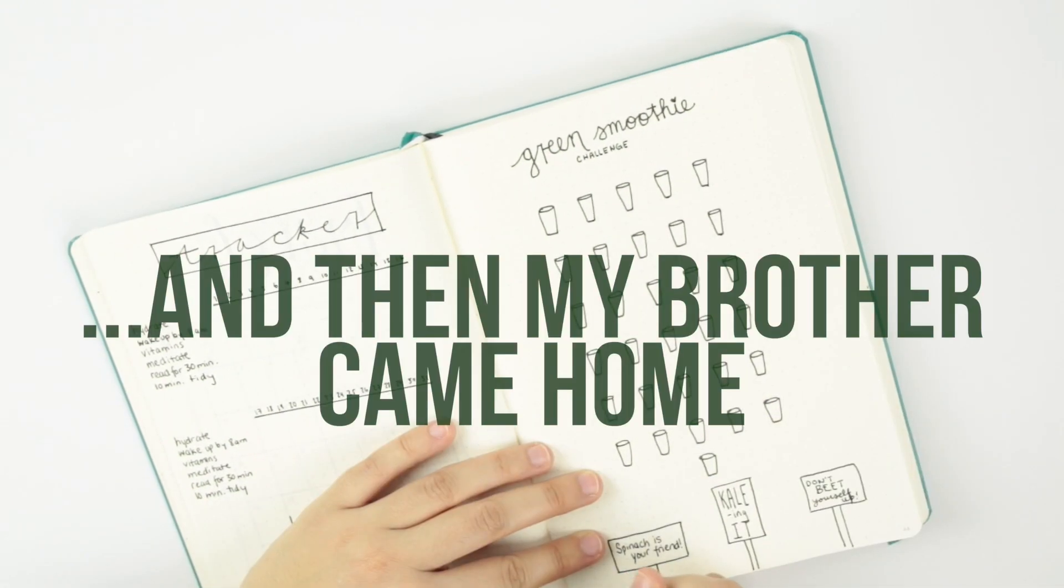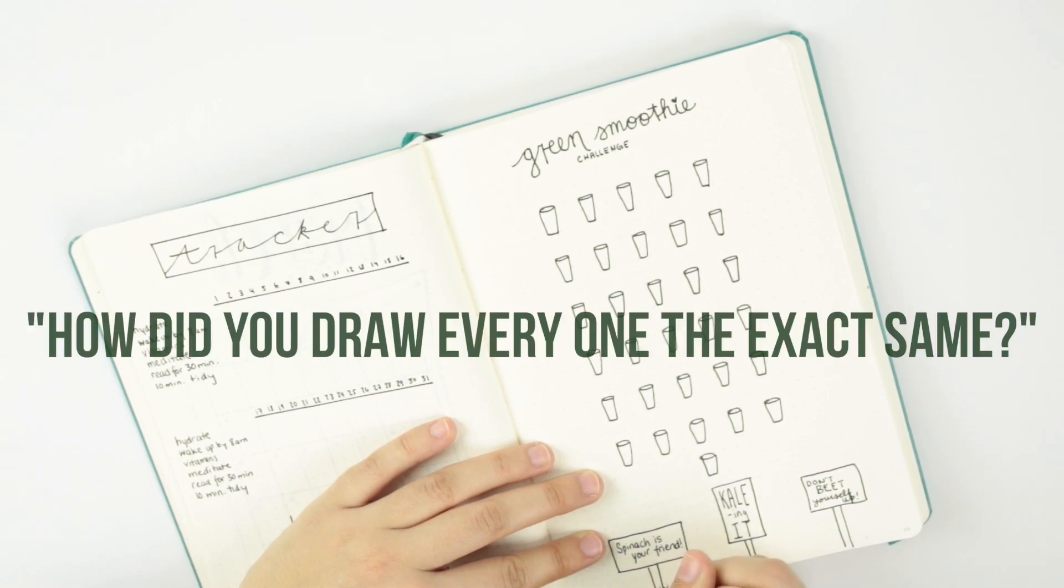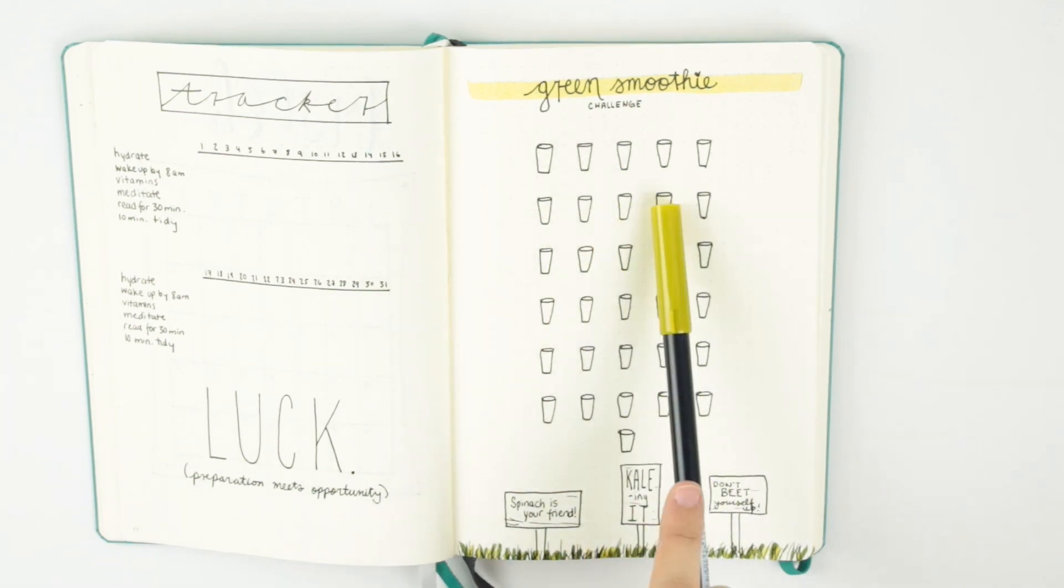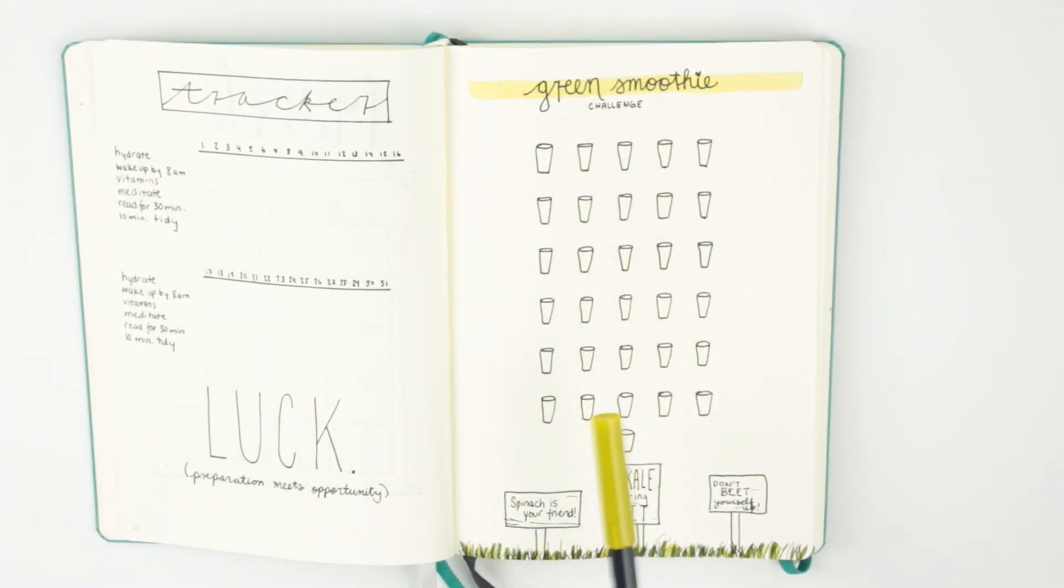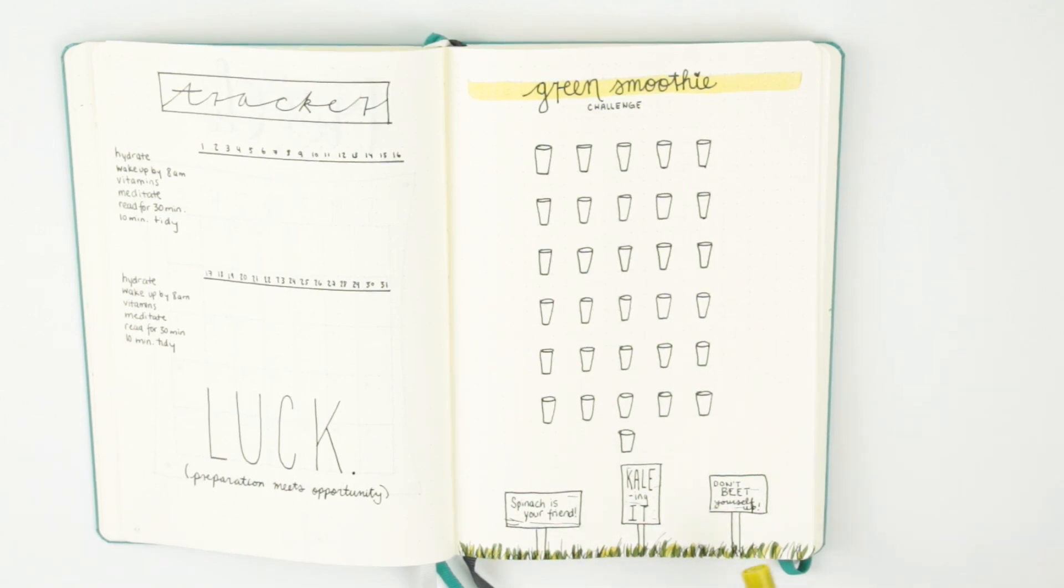Why are they cuffs? Because I'm doing a smoothie challenge in March. Magic! As you can see, I set up my green smoothie challenge by drawing a ton of cups, 31 cups to be exact, one cup per day, and I will color each cup in green every time I have a smoothie. So hopefully all of these little guys will be colored in. And at the bottom here I just have some signs related to some green things, green ingredients that you'd put in a green smoothie.